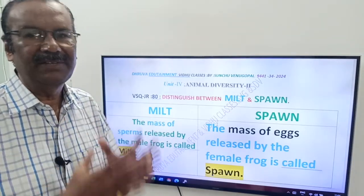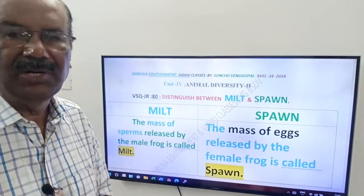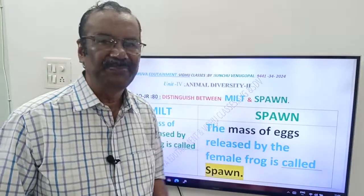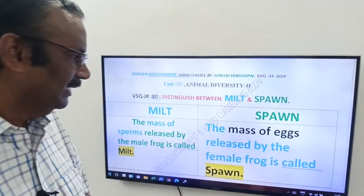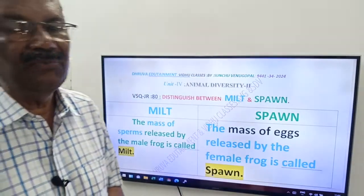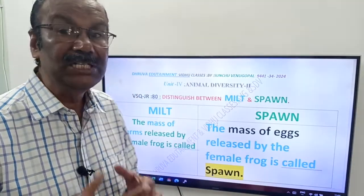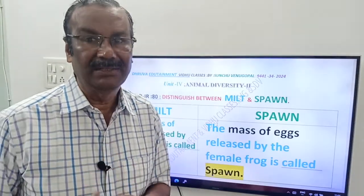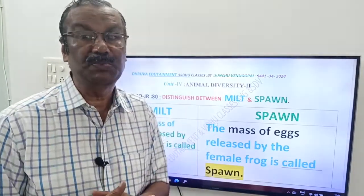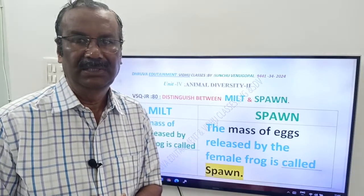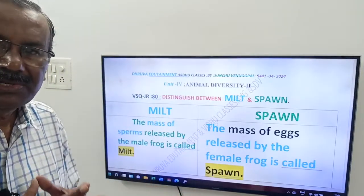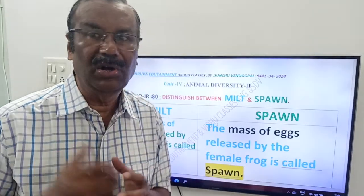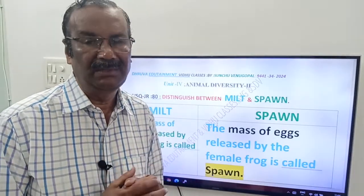Same answer, friends — instead of sperms, you write ova or eggs. The mass of eggs released by the female frog is called Spawn. The act of releasing is called Spawning.